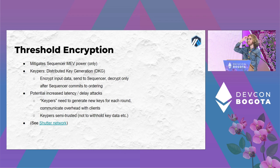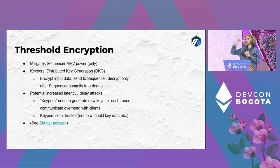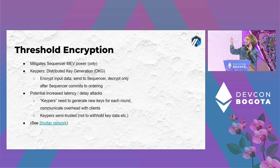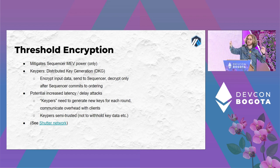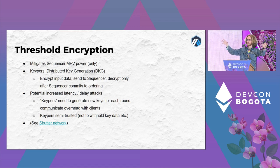For the MEV problem specifically, shout out to Shutter who's working on threshold encryption to minimize the MEV a sequencer can extract. The idea: instead of passing transactions directly to the sequencer, the user passes them in encrypted form. There's a network of 'keepers' that do distributed key generation. The sequencer commits to an ordering blindly without knowing the content of the transactions, and only after committing do we reveal the contents — so the sequencer can't easily extract value because it doesn't know what it's looking at.